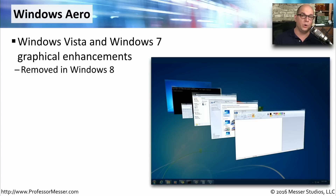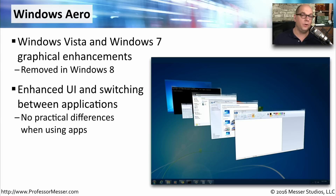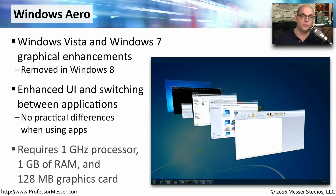If you're running Windows Vista or Windows 7, you have an enhanced graphics capability called Windows Aero, which you won't find inside Windows 8 or 8.1. These Aero graphics enhance the operating system user interface and make it easy to perform tasks like switching between applications. Inside the applications themselves, the graphics look the same whether you're using Aero or not. To use Aero, your system needs a 1 GHz processor, at least 1 GB of system memory, and a video card supporting at least 128 MB of graphics memory.